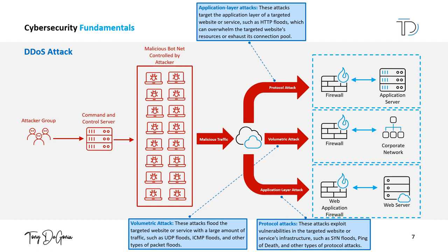It's important to have appropriate security measures in place to protect against DDoS attacks. These measures include using firewalls, intrusion detection and prevention systems, load balancers, and specialized DDoS protection services. It's also important to have a DDoS incident response plan in place and to be prepared to work with law enforcement and other organizations to mitigate the attack.